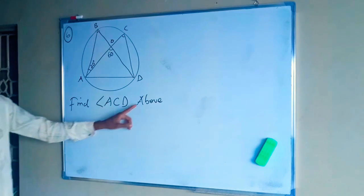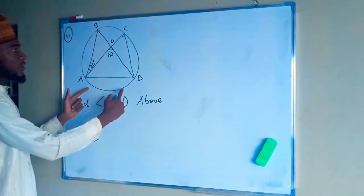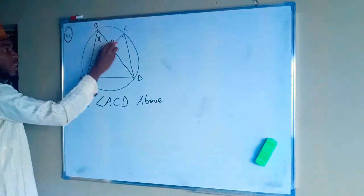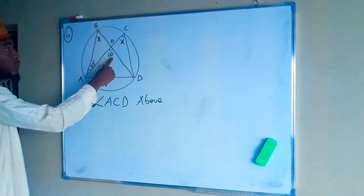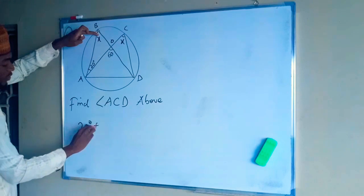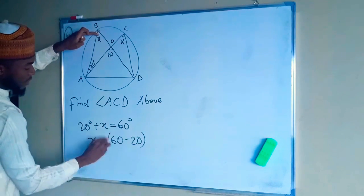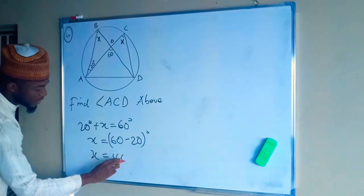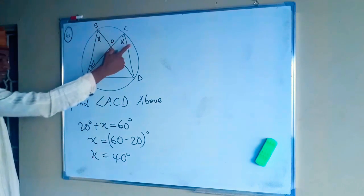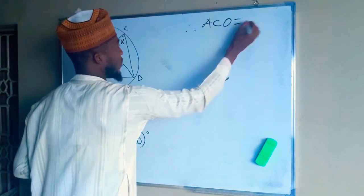Question six asks for angle ACD. By the circle theorem, angles subtended from the same arc to the circumference are equal, so angle ACD equals angle ABD — both are X. This X is an interior angle of triangle ABO, whose exterior angle is 60°. So 20° + X = 60°, giving X = 40°. Therefore angle ACD = 40 degrees.